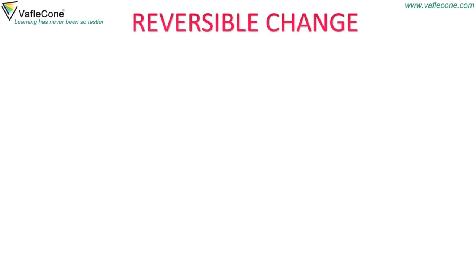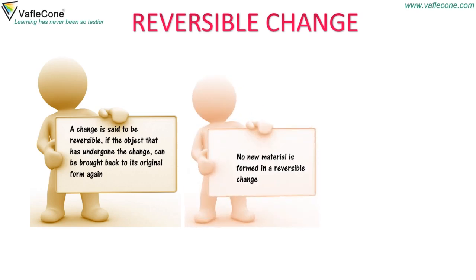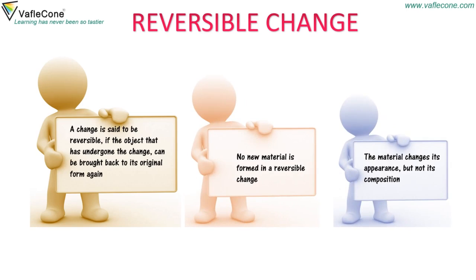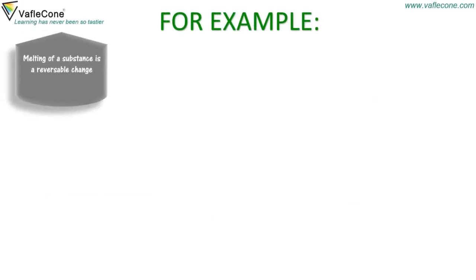Reversible change. A change is said to be reversible if the object that has undergone the change can be brought back to its original form again. No new material is formed in a reversible change. The material changes its appearance but not its composition. For example, melting of a substance is a reversible change.